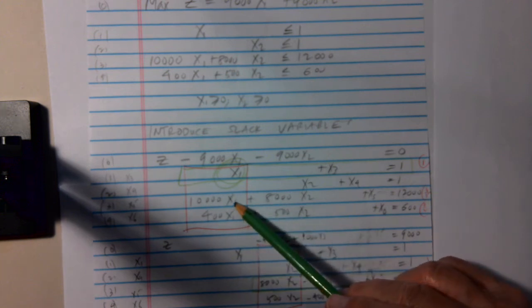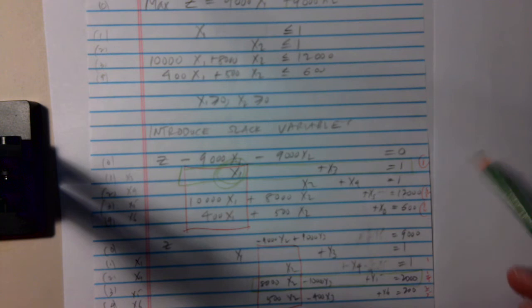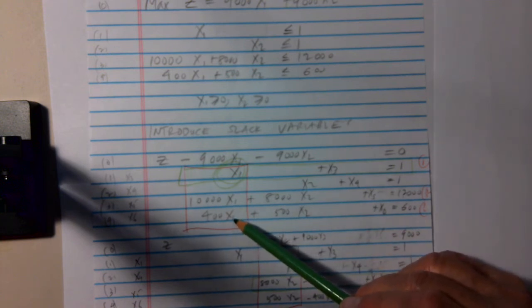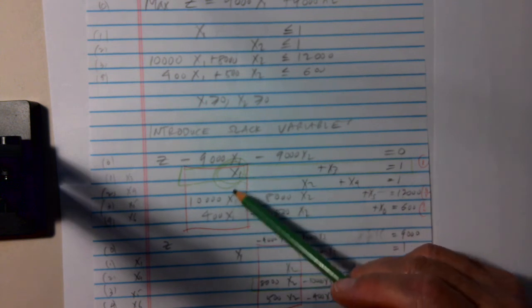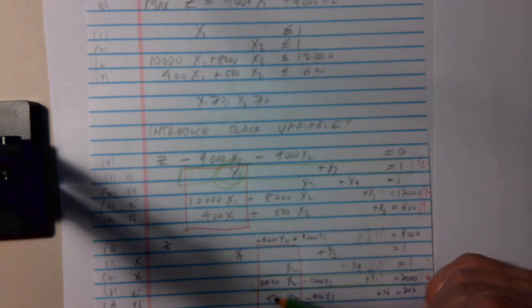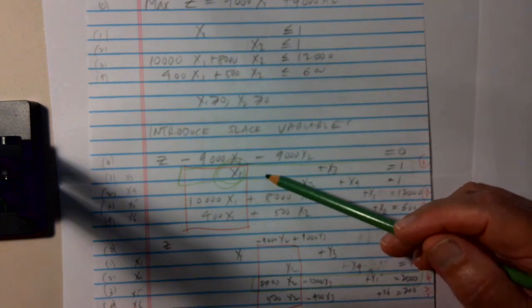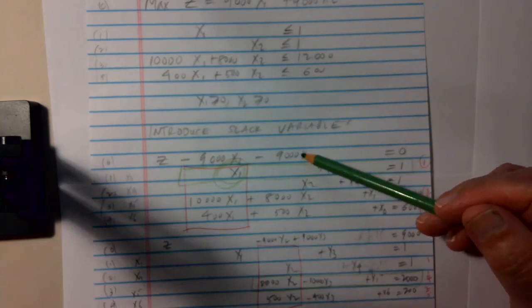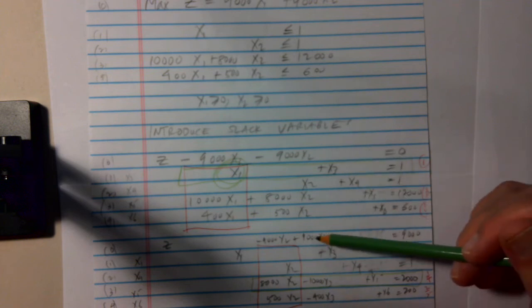If I take equation 1 and equation 2, I don't change that, because there's no X1 in equation 2. There's 10,000X1 in equation 3. So I take equation 3 minus 10,000 times equation 1. And when I do the arithmetic, this is what I get. If I take equation 4 minus 400 times equation 1, the X1s cancel. And this is what I get. And I do the same thing with the objective equation. If I add 9,000 times equation 1 to equation 0, the X1 disappears. And I get this.